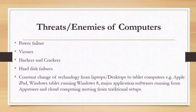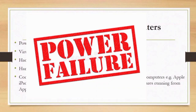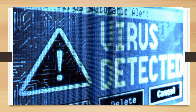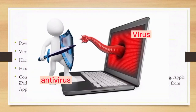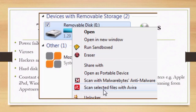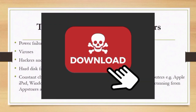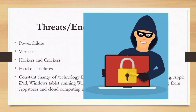Threats and enemies of computers: first, power failure — when you don't have power, you cannot use the computer. Viruses refer to harmful programs that make your computer behave abnormally. To get rid of viruses: install antivirus programs, frequently scan flash disks or removable disks before using them, and avoid downloading content from unprotected websites.